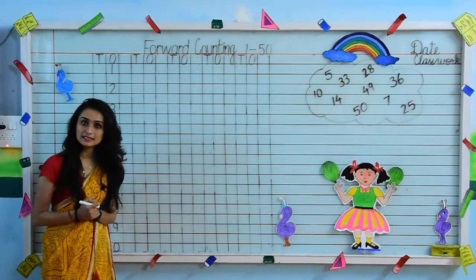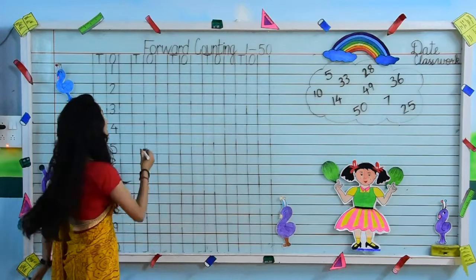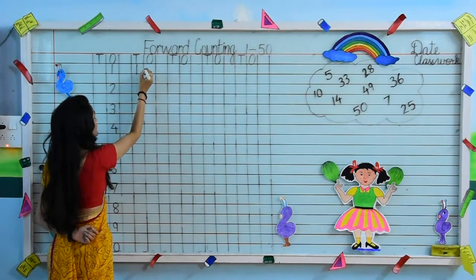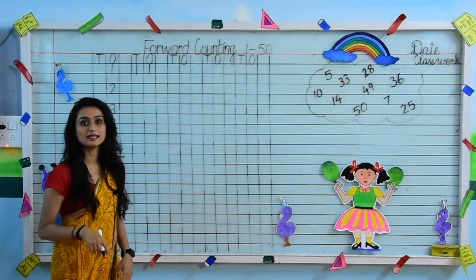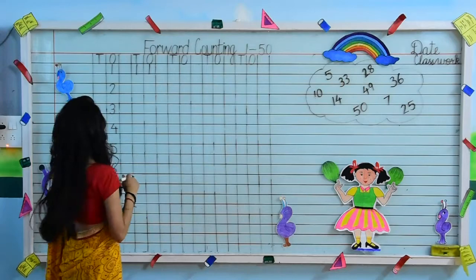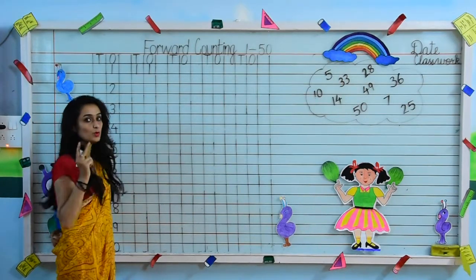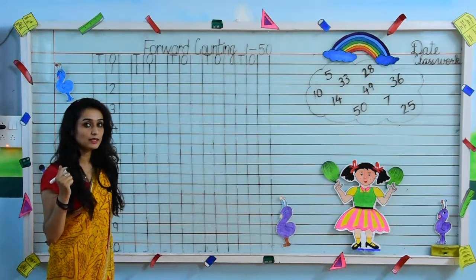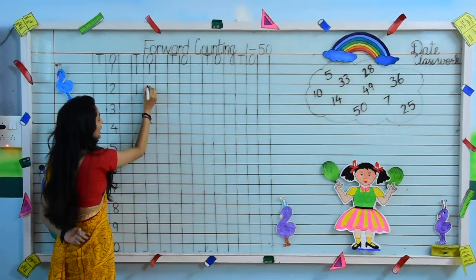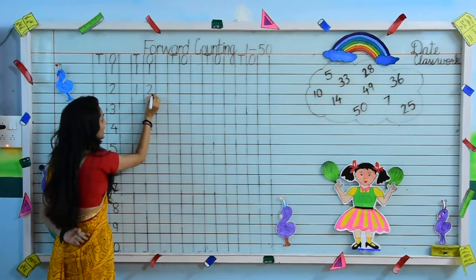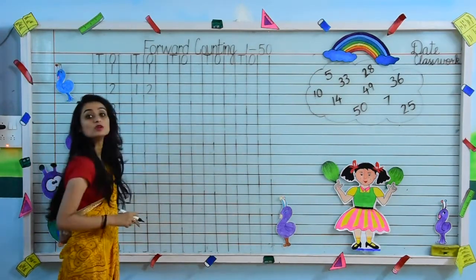Let's come on the next line. What comes after 10? The next number is 1, 1 — 11. What comes after 11? After 1, 2 is the next number. So we will write 1 and a 2, which together makes 1, 2 — 12.